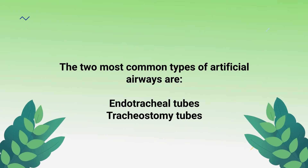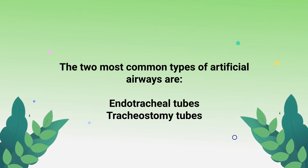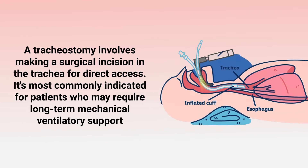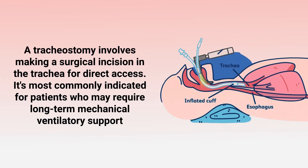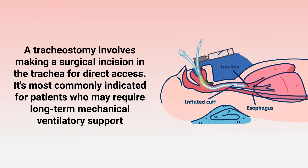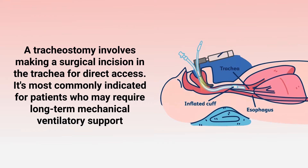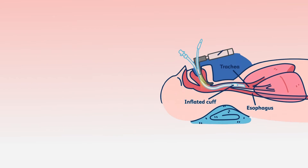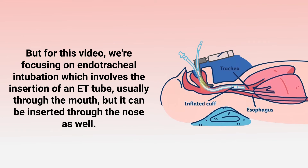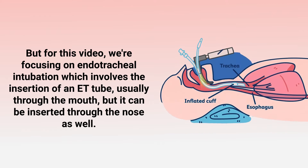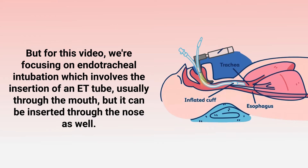The two most common types of artificial airways are endotracheal tubes and tracheostomy tubes, each with different uses and advantages. A tracheostomy involves making a surgical incision in the trachea for direct access and is most commonly indicated for patients who may require long-term mechanical ventilatory support. For this video, however, we're focusing on endotracheal intubation.